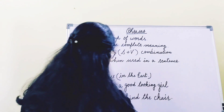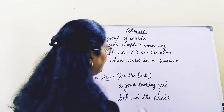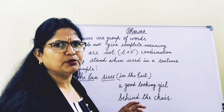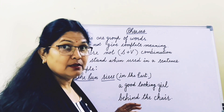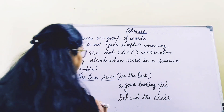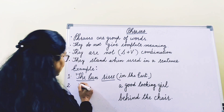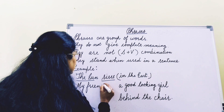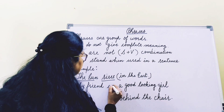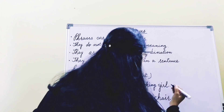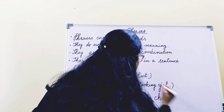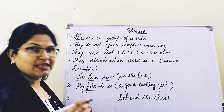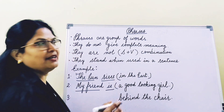Second one: 'a good looking girl.' Again, you see it's a group of four words, but it's giving incomplete meaning — we are talking something about a beautiful girl, but what we are talking is not clear. So, if we add: 'My friend is a good looking girl,' then it's giving a complete sense. Here, 'a good looking girl' is a phrase, 'my friend' is the subject, and 'is' is the verb.